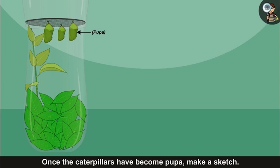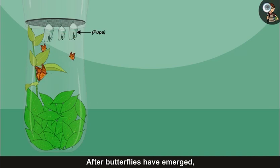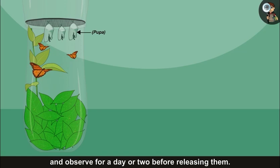Once the caterpillars have become pupa, make a sketch. After butterflies have emerged, move them to an aquarium and observe for a day or two before releasing them.